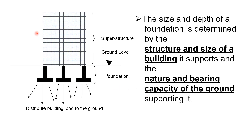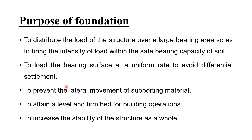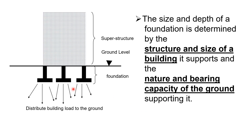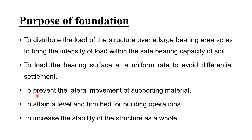To prevent the lateral movement of supporting material: if we place a building on the ground without any type of foundation, the building may move laterally or horizontally. That is why we provide the footing — to prevent lateral movement. We also investigate the soil and confirm that the bed or location where we provide the footing can bear the load of the building.